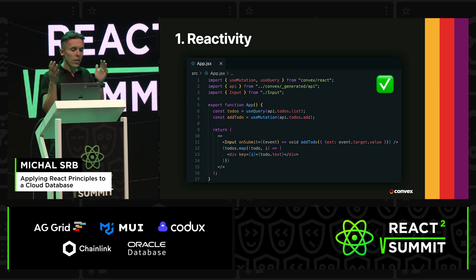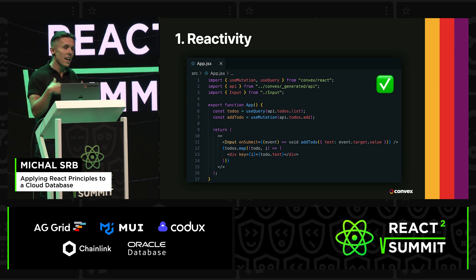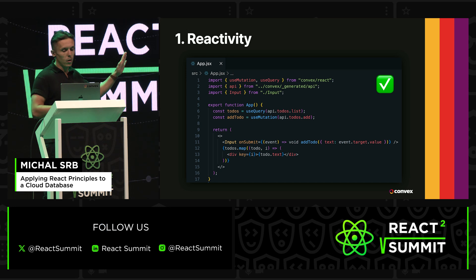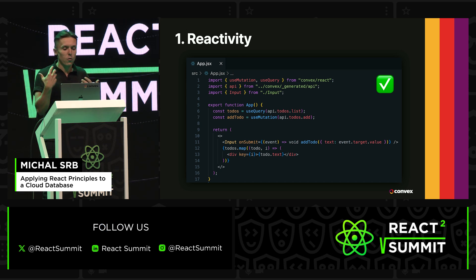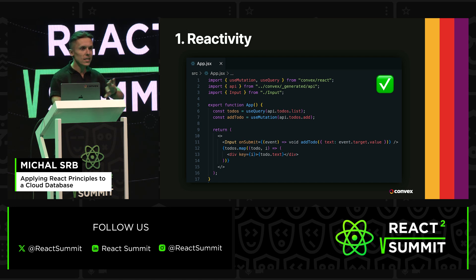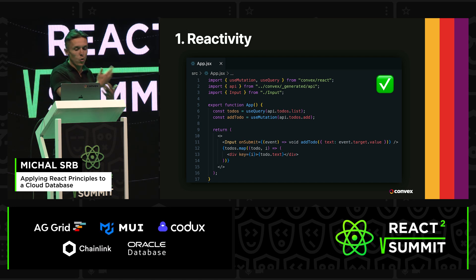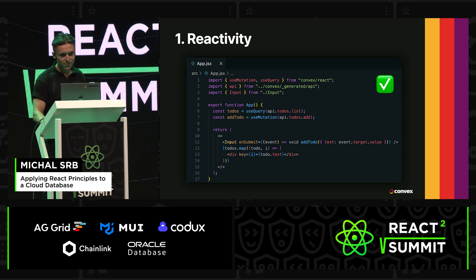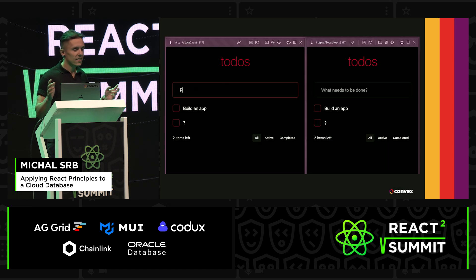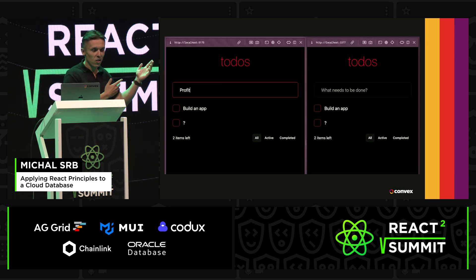So with Convex, you can build endpoints which are as reactive as your state. In this example, I just write the to-do into the database, and the database figures out for me that the list of to-dos needs updating, pushes the updates to all clients, and those trigger React to render automatically. And that's all it takes.